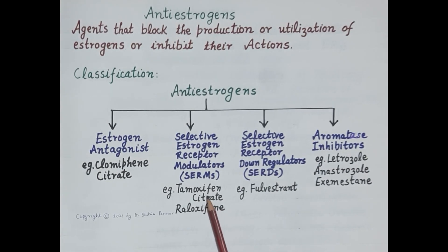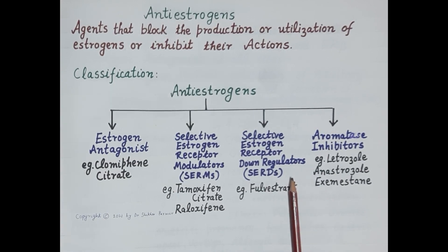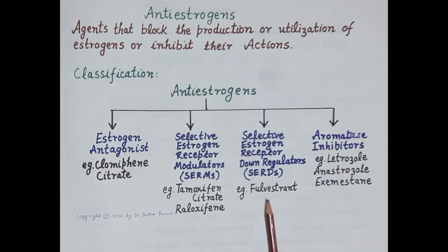These drugs selectively modulate estrogen receptors, exerting agonistic action in some tissues and antagonistic action in others. Tamoxifen exerts antagonistic action in breast tissue, so it is used in the treatment of breast cancer. Raloxifen exerts partial agonistic effect on bone tissue and is used as a second-line drug in the prevention and treatment of osteoporosis. The third category are selective estrogen receptor down-regulators.